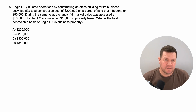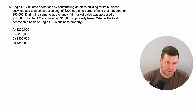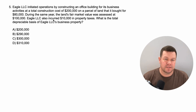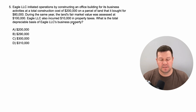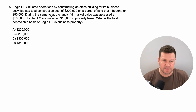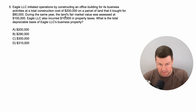Question five: Eagle LLC initiated operations by constructing an office building for its business activities at a total construction cost of $200,000 on a parcel of land it bought for $80,000. During the same year, the land's fair market value was assessed at $100,000. Eagle LLC also incurred $10,000 in property taxes. What is the total depreciable basis of Eagle LLC's business property? There's a key thing in here you should know from accounting basics — part of this question is irrelevant.